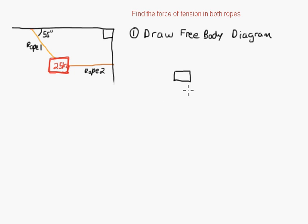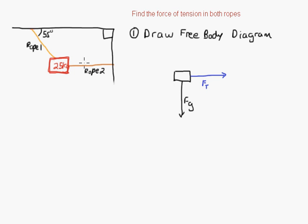The first force acting on this mass is the force of gravity — we'll call that FG. The next force is from rope two, holding it in place going directly horizontally. Any time you have a force acting on a rope, it's called tension. Here we have two forces of tension: force tension from rope two (FT2) going directly horizontal, and force tension from rope one (FT1).